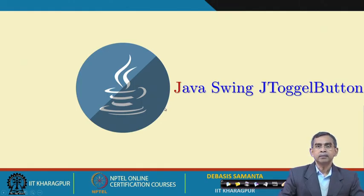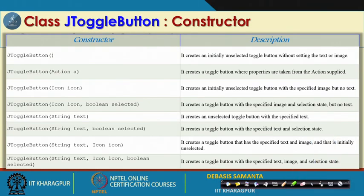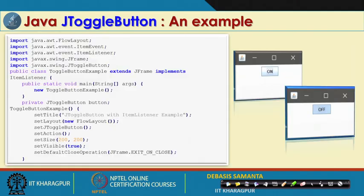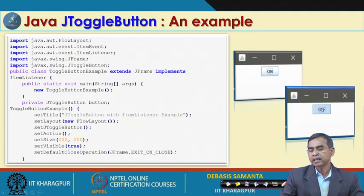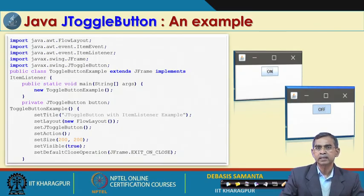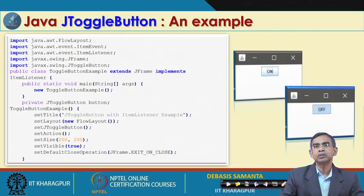JToggleButton is also a button, but the difference is that it toggles between two states — on/off, open/close, or male/female — a binary pattern. It has several constructors and methods. In the example, one button has two states: on and off. If you click it while on, it toggles to off, and clicking again toggles back to on. Whenever the toggle event occurs, the button value is set accordingly and can be used elsewhere in the program.